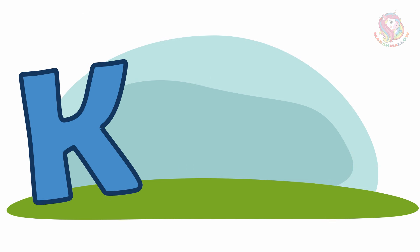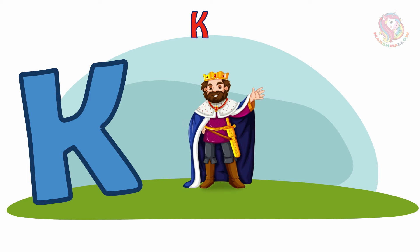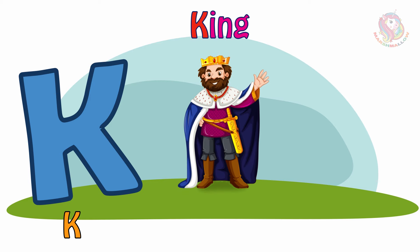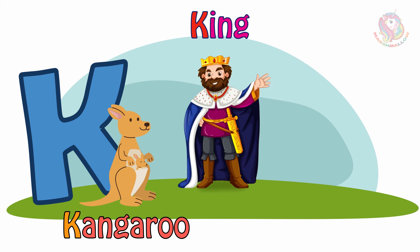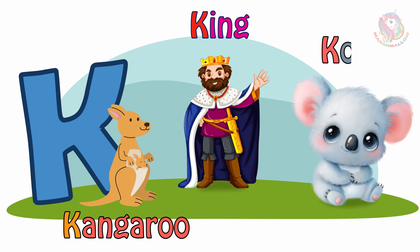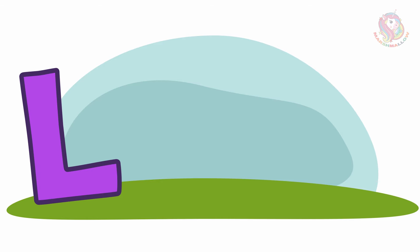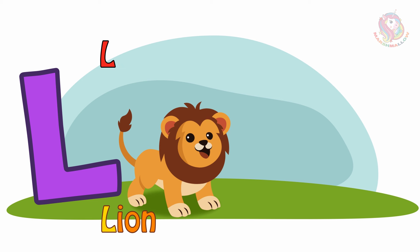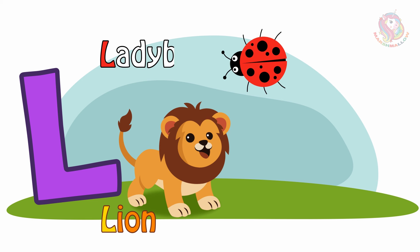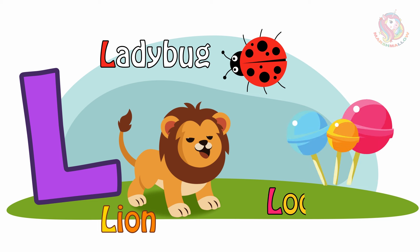K - K is for King. K is for Kangaroo. K is for Koala. L - L is for Lion. L is for Ladybug. L is for Lollipop.